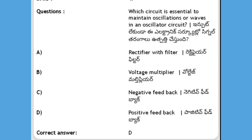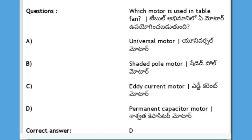Which circuit is essential to maintain oscillations or waves in an oscillator circuit? Options: rectifier, filter, voltage multiplier, negative feedback, positive feedback. The answer is D, positive feedback circuit.